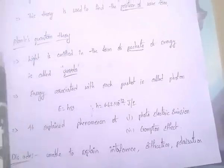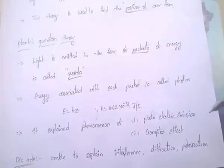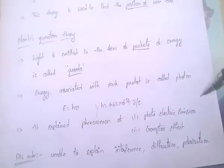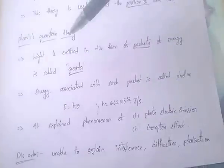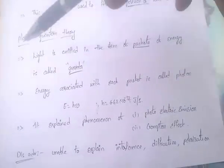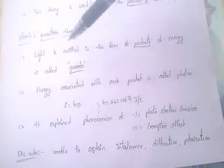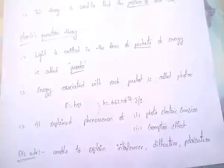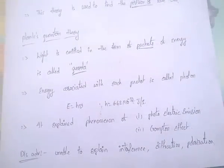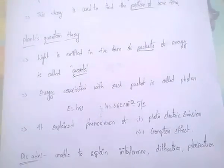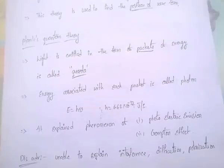Planck's quantum theory explained the phenomena of photoelectric emission and also the Compton effect. But the disadvantage of this theory is it is unable to explain interference, diffraction, and polarization.